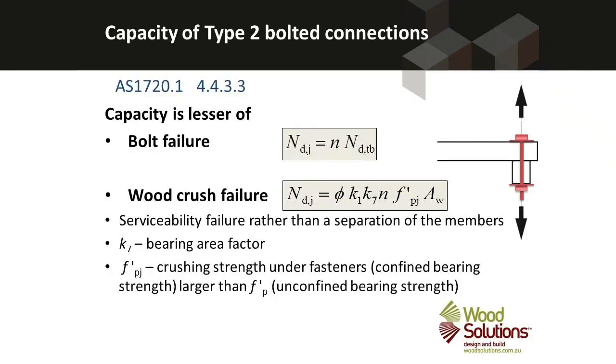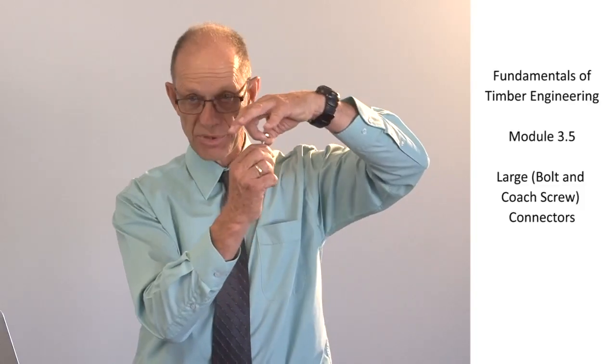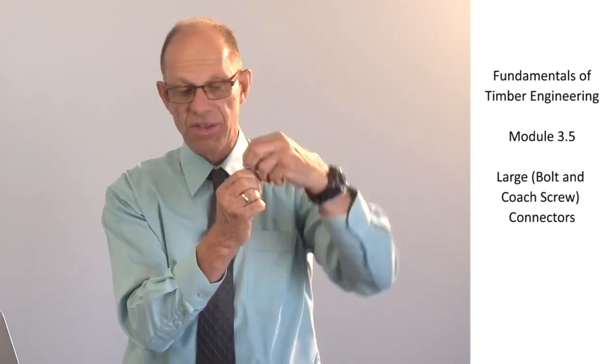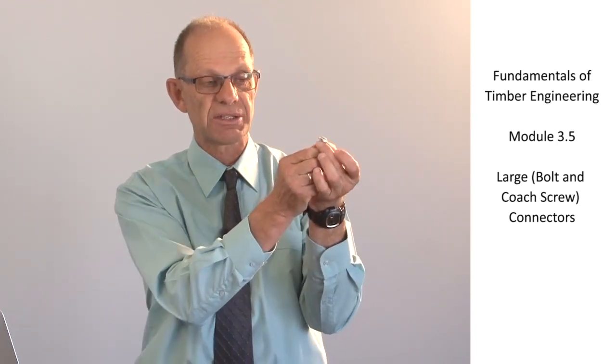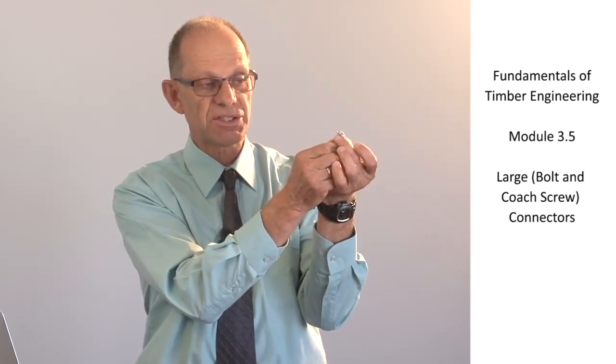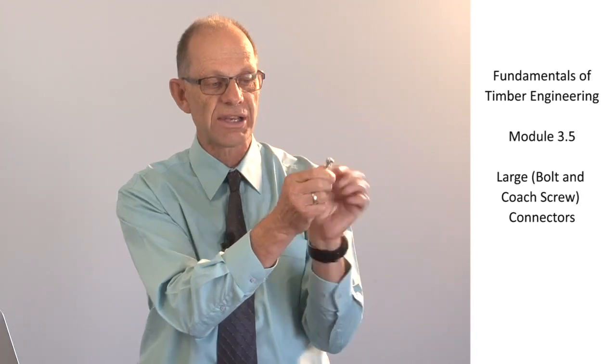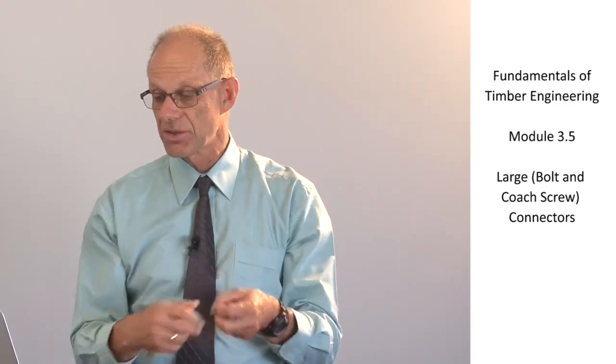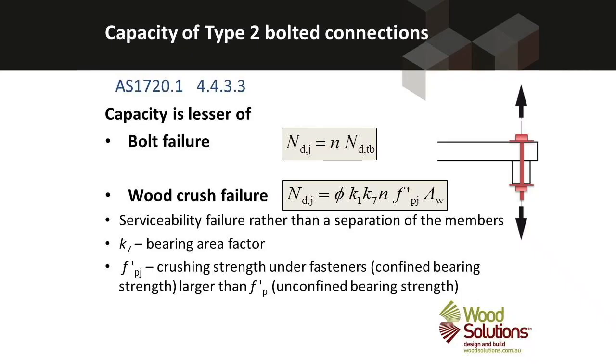The capacity of a type 2 bolted connection is given by these formulae and there are two formulae. One is limited by the tensile strength of the bolt. So if the bolt is put in tension and it fails in tension then the joint will come apart. The other mode of failure is by crushing under the head so that the tension in the bolt leads to high localised compression in the timber immediately under the bolt head and that can cause localised failure. So two different capacity equations for type 2 bolted connections.